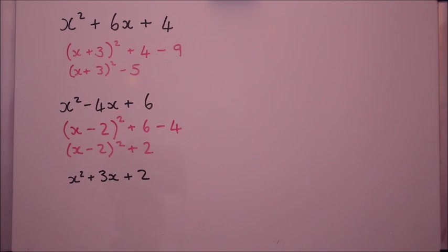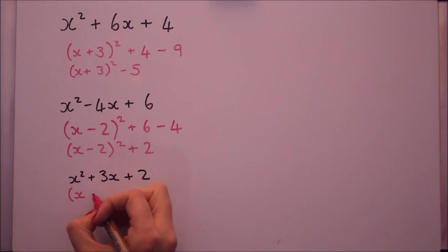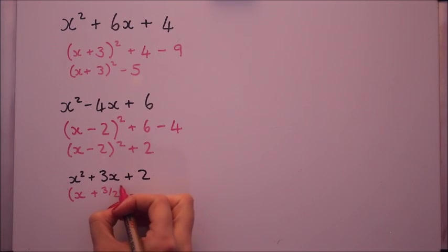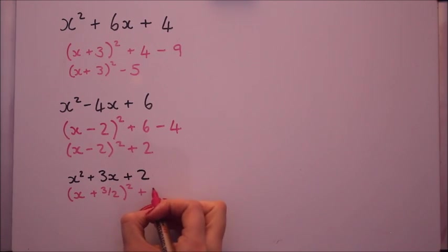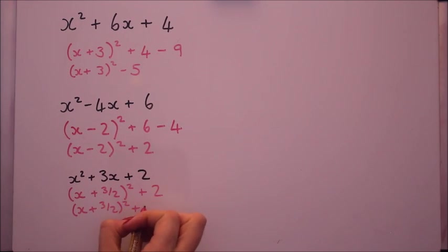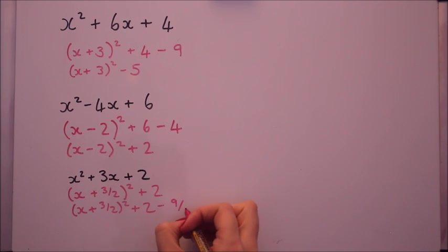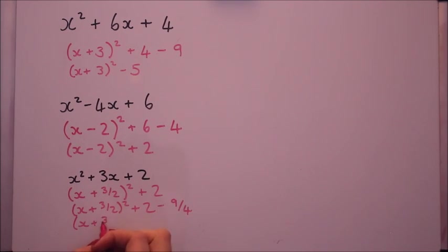This last one here is slightly trickier. If we half three, I'll keep that as a fraction, three over two. Now we've got fractions in the mix on this one. So we're going to take three over two. Three over two squared. Three squared is nine. Two squared is four. And that's it. So we can keep it with fractions.